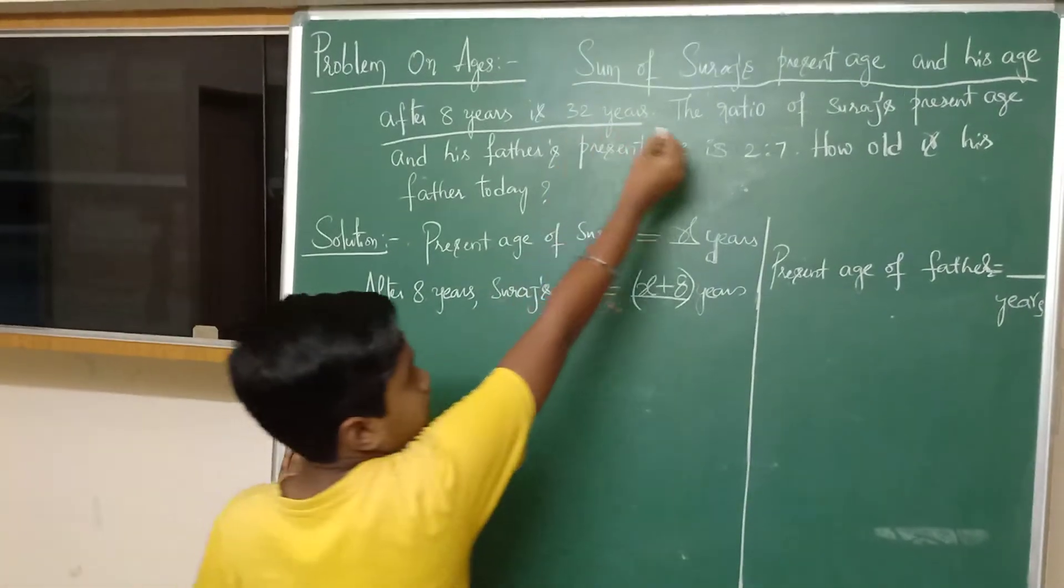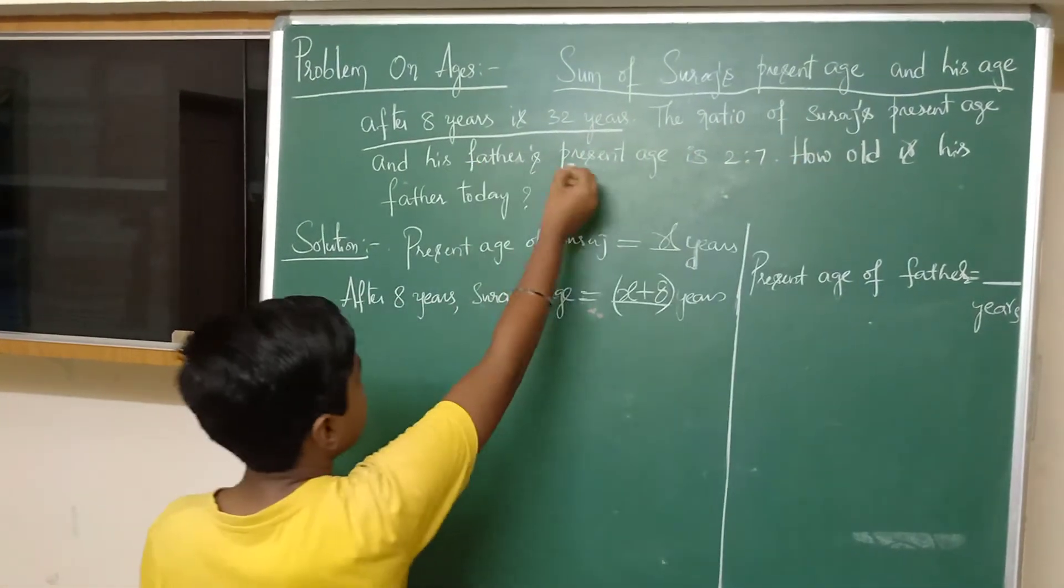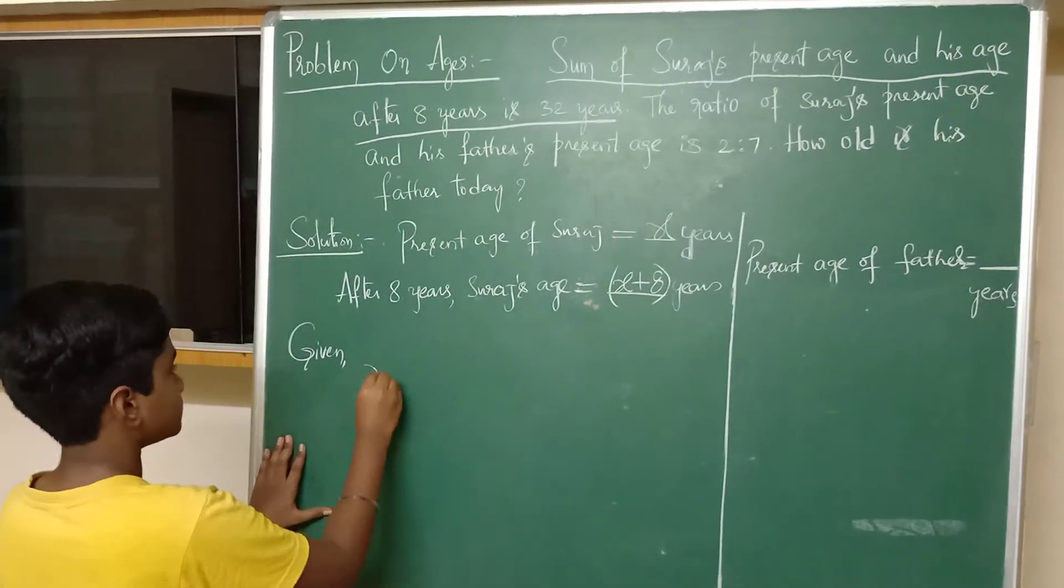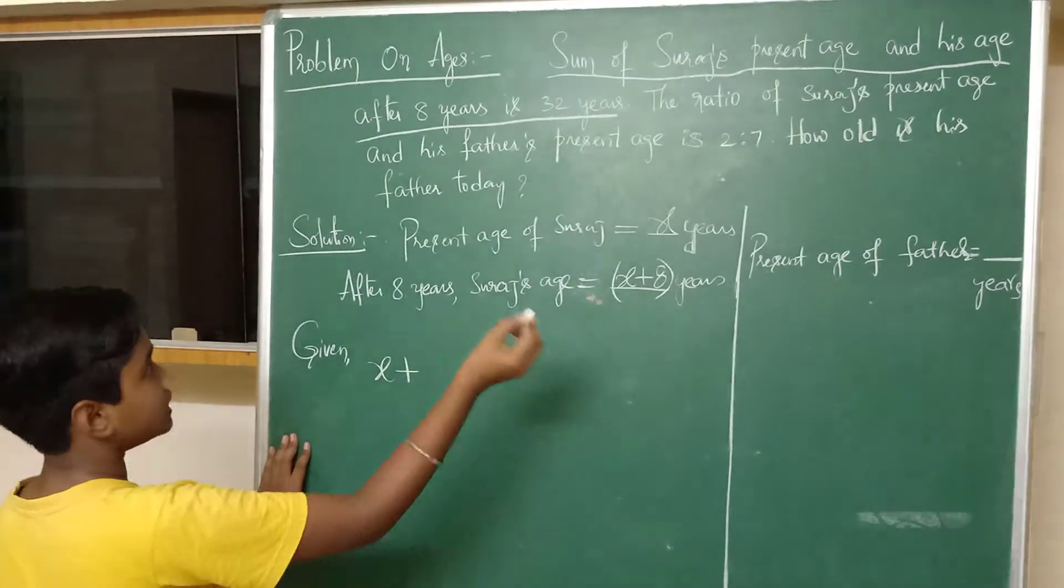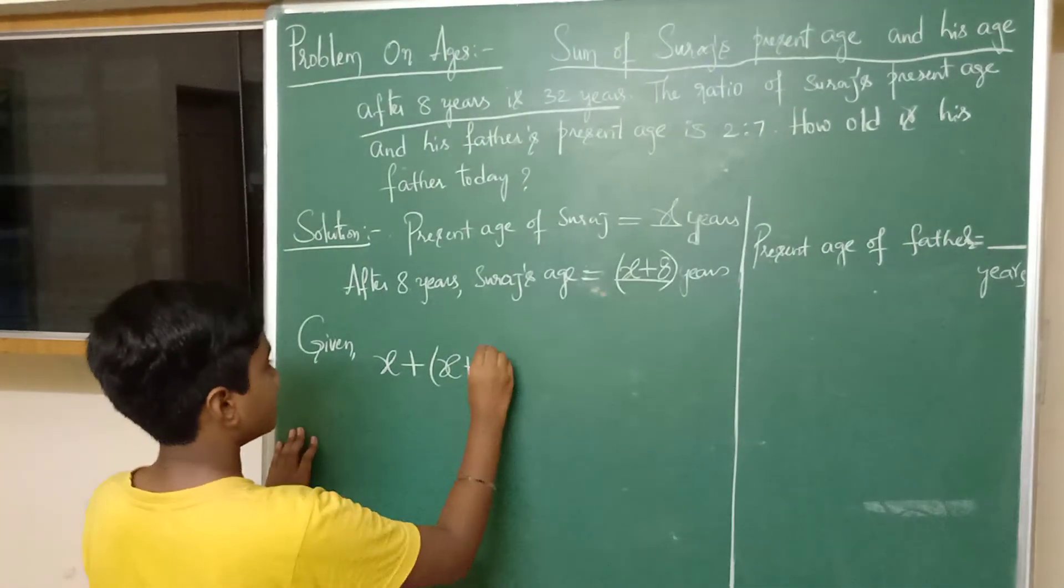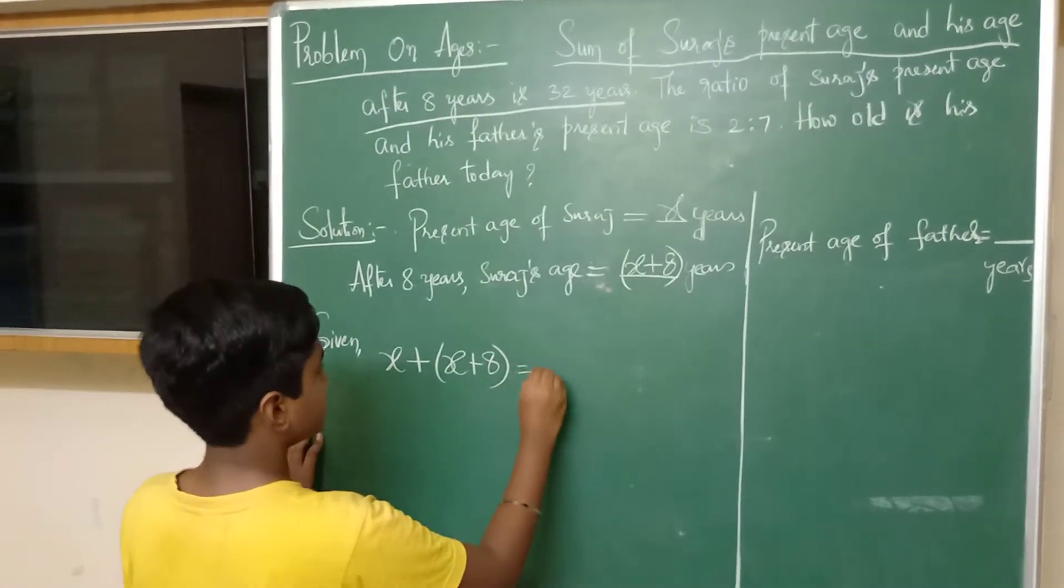Given sum of Suresh's present age and his age after 8 years is 32 years. Sum of Suresh's present age is X years. X plus his age after 8 years is X plus 8, is equals to 32 years.